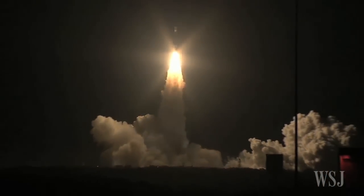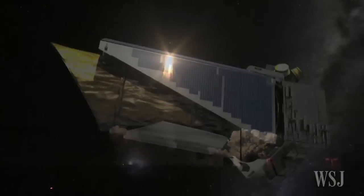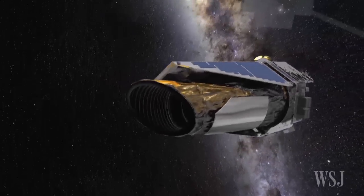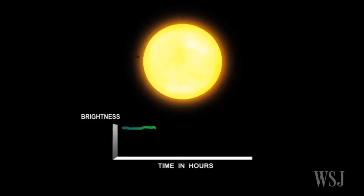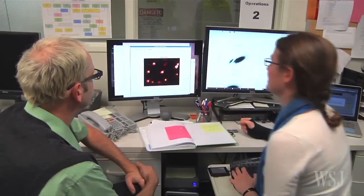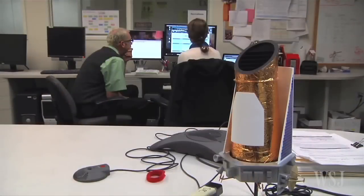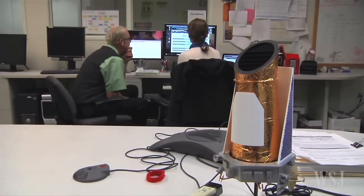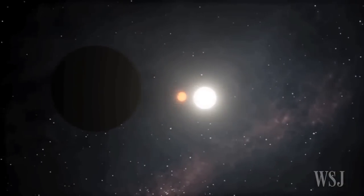The Kepler spacecraft was launched in 2009 and spent four years analyzing a patch of the Milky Way and searched for dips in the brightness of stars caused by planets passing in front of them. Scientists are still pouring through the trove of data gathered and finding new candidate planets. With this latest discovery, Kepler has now found over 1,000 confirmed planets.